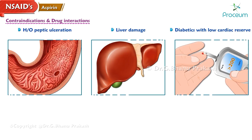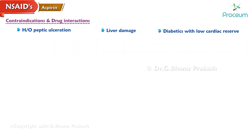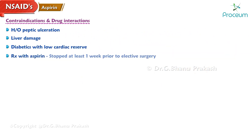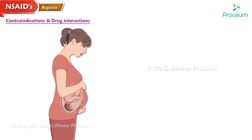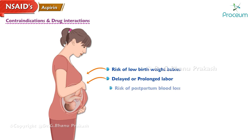Contraindications: Aspirin is contraindicated in patients with a history of peptic ulceration, liver damage, and in diabetics with low cardiac reserve. Treatment with aspirin must be stopped at least one week prior to elective surgery. Patients with G6PD deficiency given high doses have an increased risk of hemolysis.